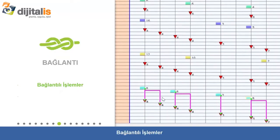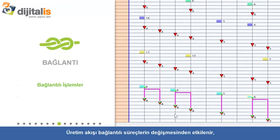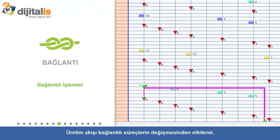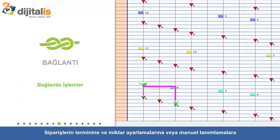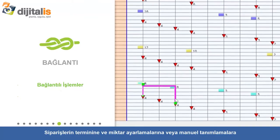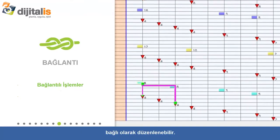Pegging Processes: The flow of production can be changed by modifying the peggings, which can be set according to orders, deadlines, and quantity adjustments for manually specified items.